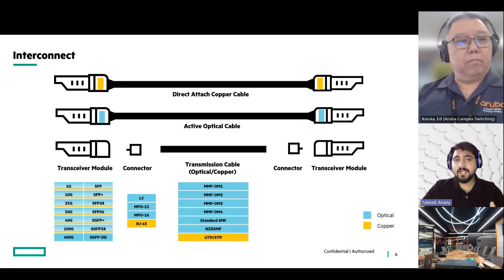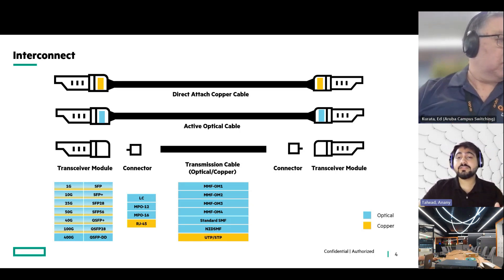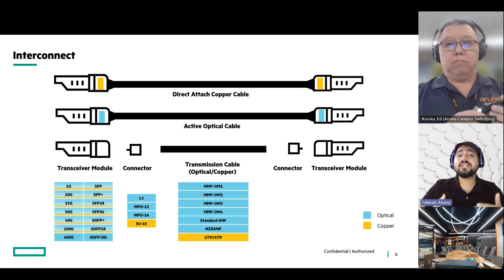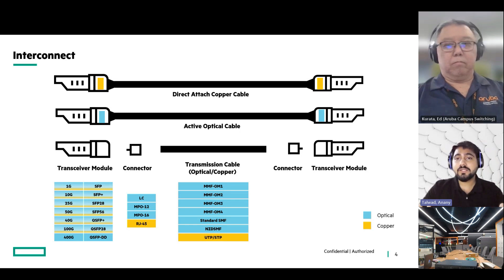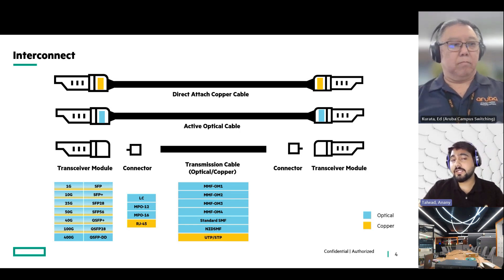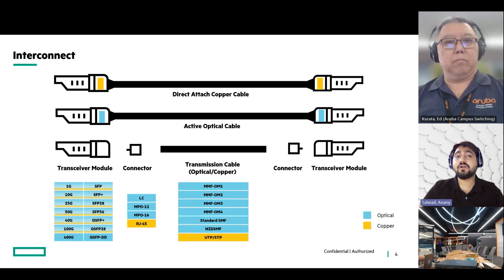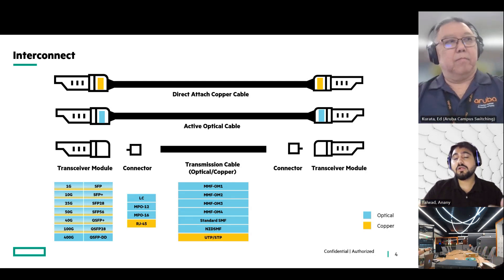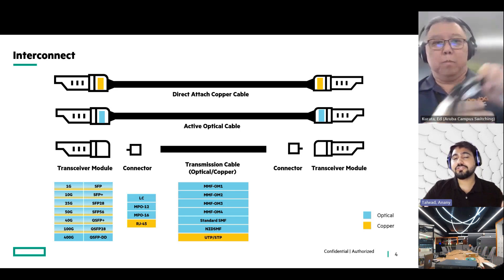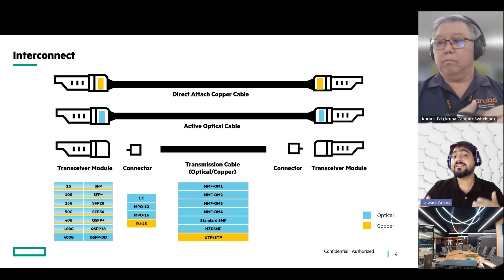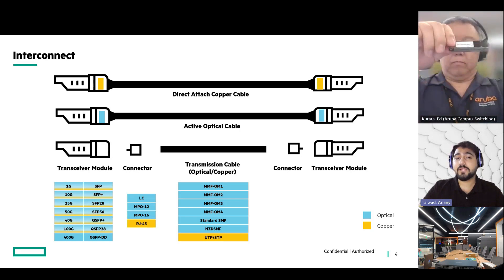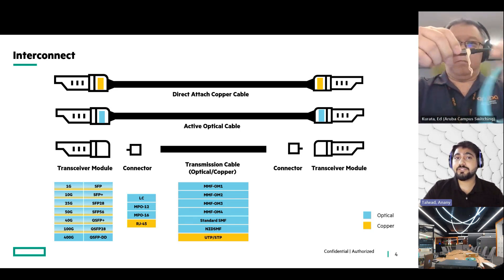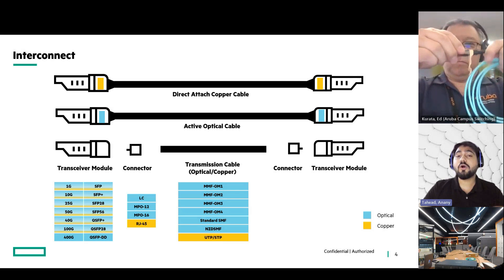First, you need to understand that there are three types of interconnects that we currently have. The first one, as you can see on my screen right now, is a direct attached copper cable. In this direct attached copper cable, you have transceivers connected on either side of a copper cable — this is how it comes with the by-default attached cable. Coming to the AOC, it's a similar structure to the direct attached copper cable, but in this case you have the cable with optical fiber, and the transceivers on each end are connected to it by default and support optical cable.